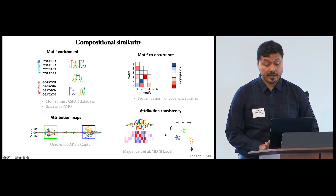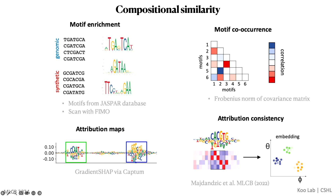Compositional similarity aims to evaluate whether synthetic sequences contain key elements of regulatory DNA, particularly motifs and their grammars. We conduct standard motif enrichment analysis using a database of known motifs, and we also examine their co-occurrences. We also analyze functional motifs identified through attribution analysis, such as gradient SHAP, that allows us to assess the composition of functional motifs that might not be present in existing databases. Furthermore, we deployed an attribution consistency metric to quantify the consistency of patterns within a population of attribution maps.